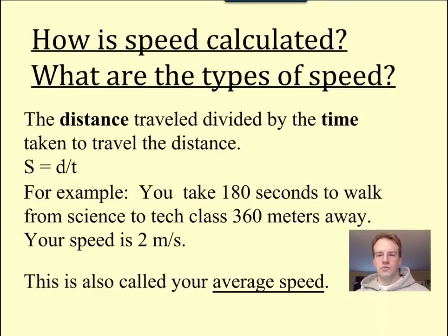How is speed calculated? What are the types of speed? This is calculated using the equation speed equals distance divided by time. We have to determine the rate. So this is the equation S equals D divided by T. For example, if you take 180 seconds to walk from science to tech class in Mr. Bryden's room, that's 360 meters away, your speed is 2 meters per second. Because if it's 360 meters divided by 180 seconds, that's 2. And notice how we abbreviate meters per with that slash seconds.